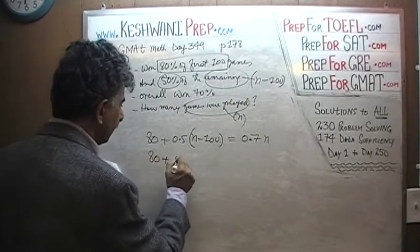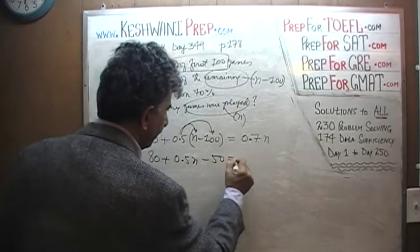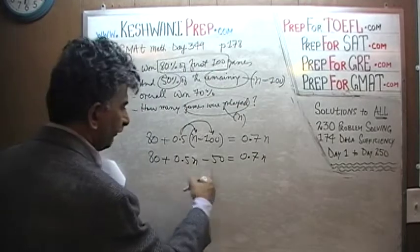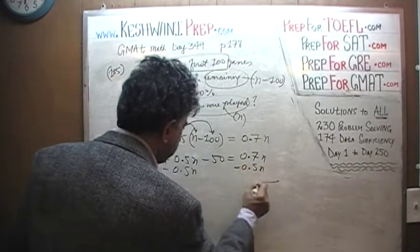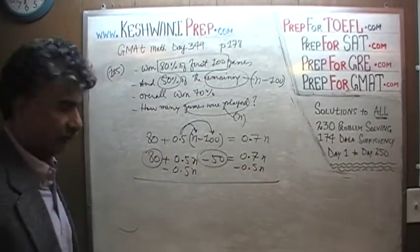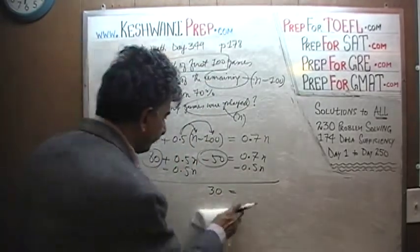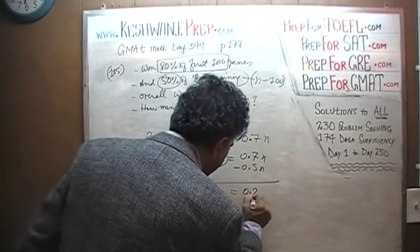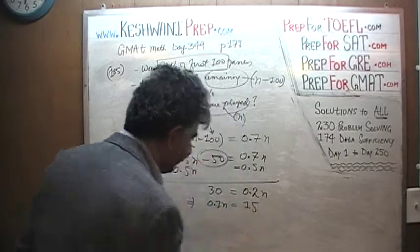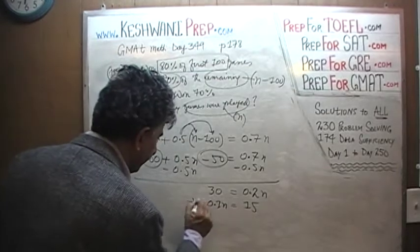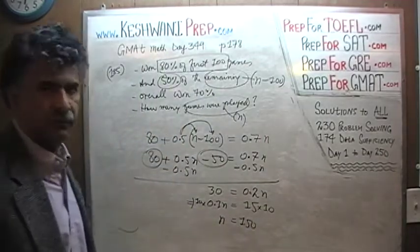So we get: 80 plus 0.5(n − 100) = 0.7n. Expanding: 80 plus 0.5n minus 50 equals 0.7n. Subtracting 0.5n from both sides: 80 minus 50 equals 0.2n, so 30 equals 0.2n. That implies 0.1n equals 15, and therefore n equals 150.